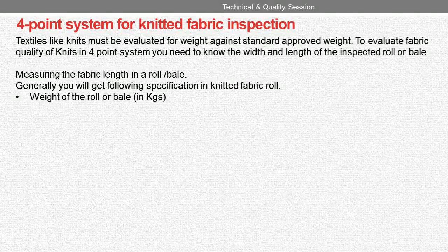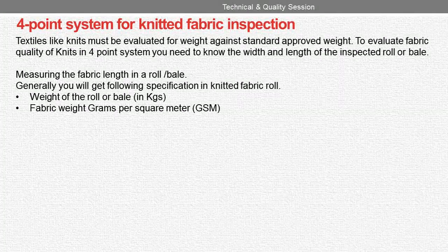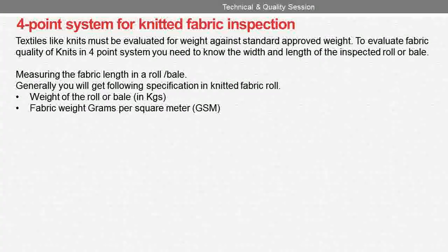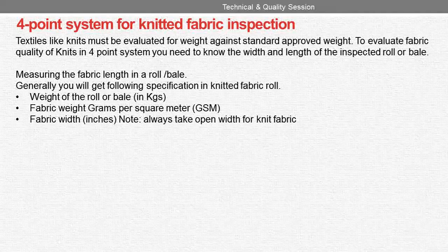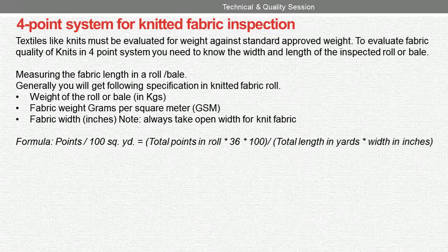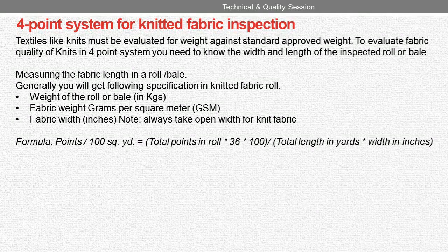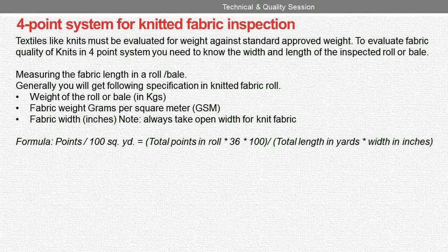The specifications are: weight of the roll or bale in kgs, fabric weight in grams per square meter (GSM), and fabric width in inches. Note: always take open width for knit fabric. Formula: Points per 100 square yards = (total points in roll × 36 × 100) ÷ (total length in yards × width in inches).